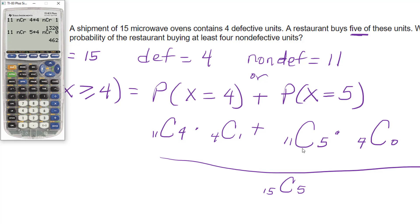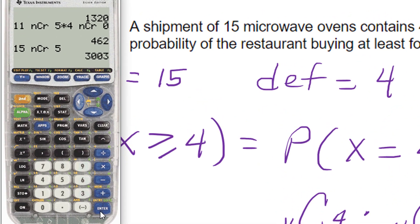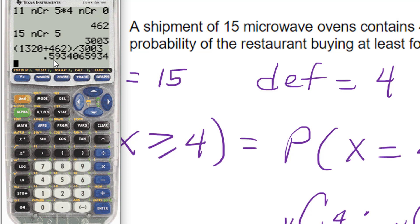So I'm going to add those together, but now I need to know what I'm going to divide by, which is 15, take five at a time. So I've got everything I need. 1320 plus 462 divided by 3003. And that's my answer, my probability, 0.593. And that's it.